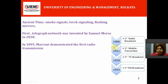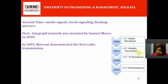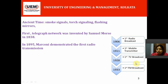In 1906, the first radio broadcast was started. In 1911, the first mobile transmitter came into the picture. In 1928, the first TV broadcast was started. In 1933, the first FM broadcast was started.